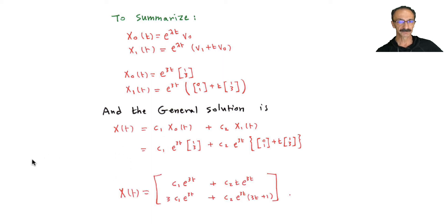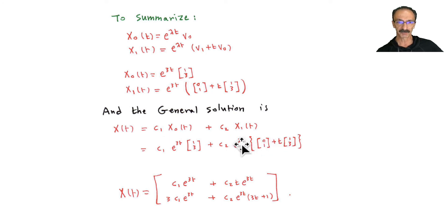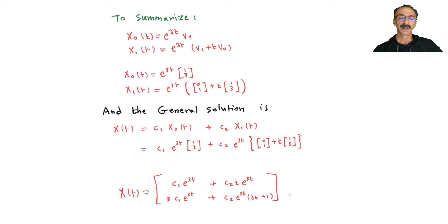You can go further and expand: that's 0 plus t times 1, all multiplied by e^(3t) — that's what appears here. Add to it 1 times e^(3t) times c1. This gives you two components. You could also combine terms: 1 + 3t multiplied for the bottom part. Both forms are equivalent.